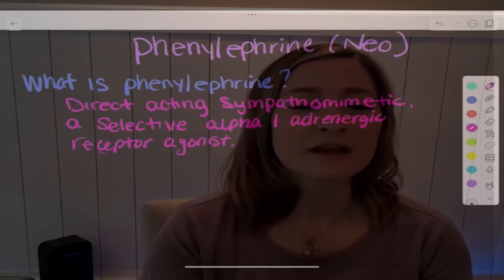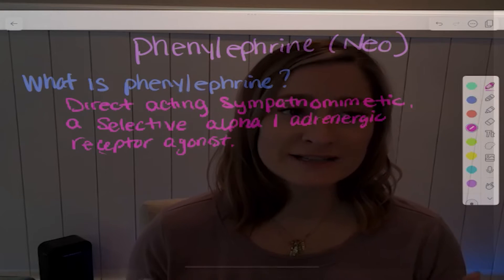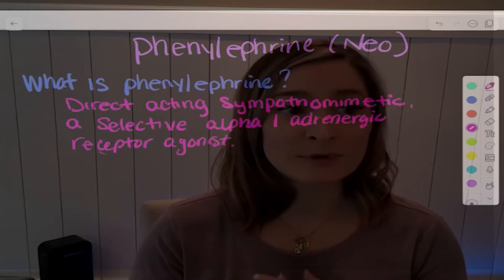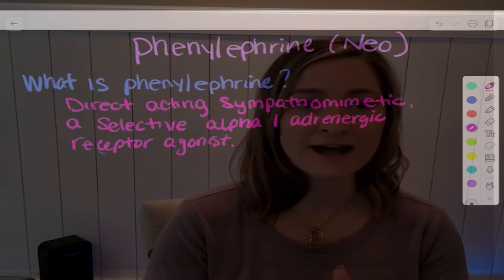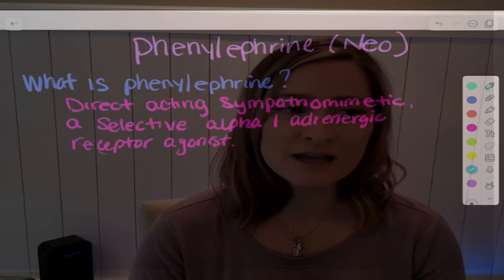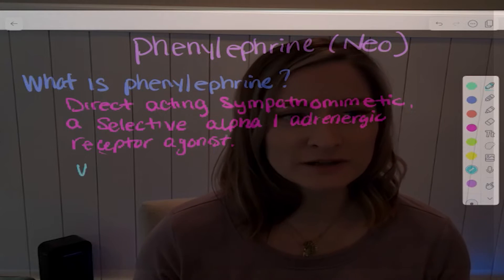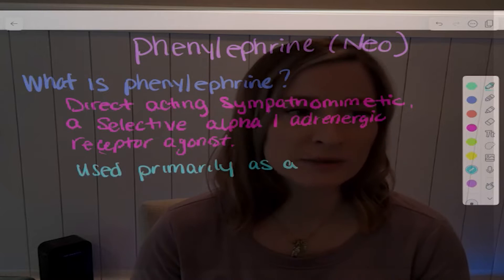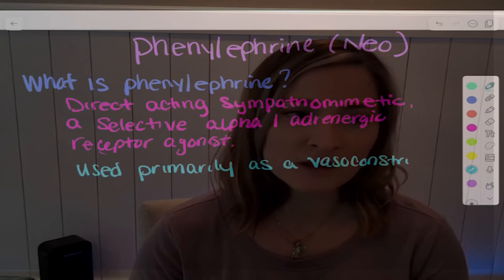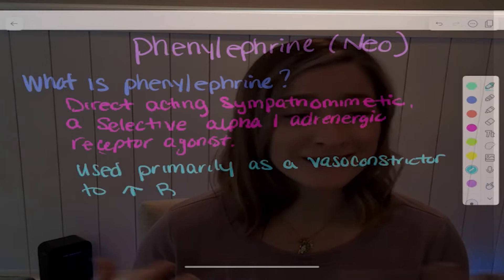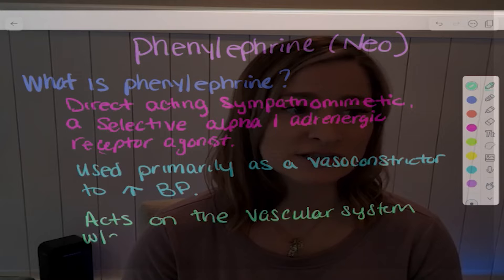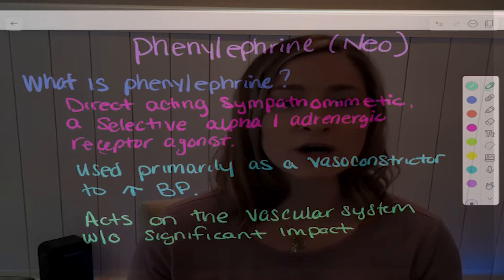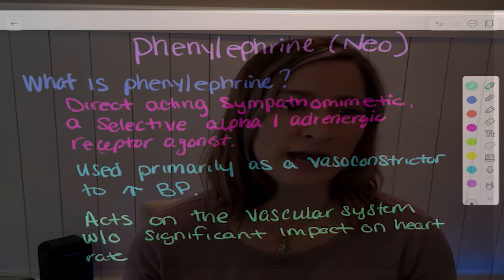So what is phenylephrine? Phenylephrine is a direct-acting sympathomimetic, which is a selective alpha-1 adrenergic receptor agonist. It's used primarily as a vasoconstrictor to increase blood pressure. However, unlike epinephrine, it primarily acts on the vascular system without significant impact on heart rate or cardiac output.